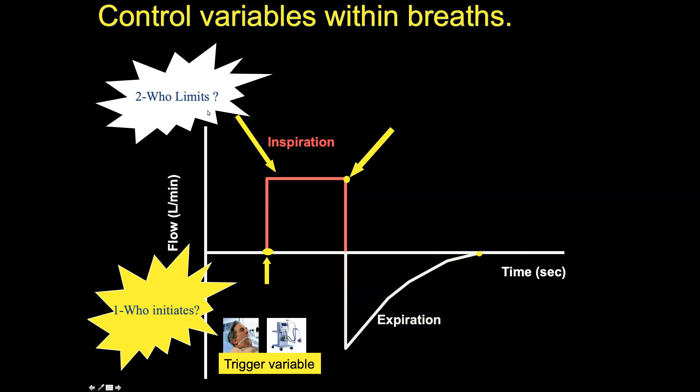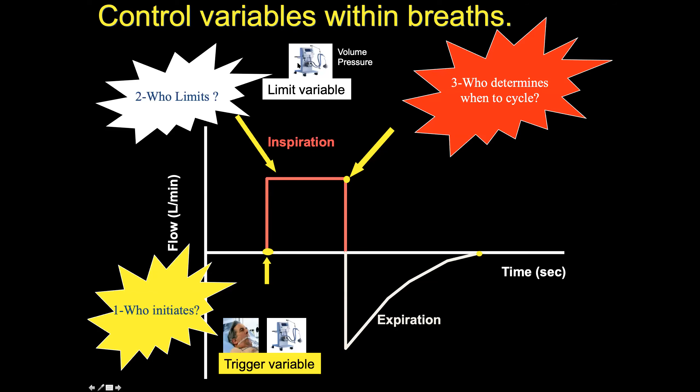The limiting part — we have already discussed the two limits: volume and pressure. The limit variable is controlled by the ventilator in all modes of mechanical ventilation. Either you set 400 ml tidal volume or a pressure of 20–25 cm — that is the limit you set. That is why modes are called volume controlled or pressure limited or pressure controlled breaths.